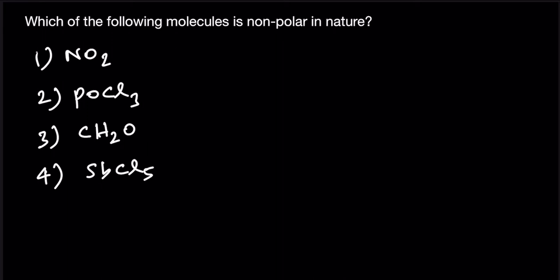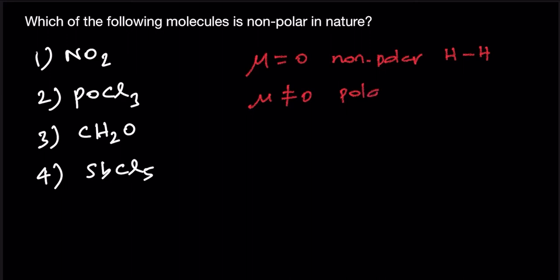Hello everyone. The question here is which of the following molecules is nonpolar in nature. In general, if the dipole moment of a molecule is equal to zero, then it will be nonpolar. For example, simple diatomic molecules like H2 have a dipole moment of zero, and therefore it is a nonpolar molecule. On the contrary, if the net dipole moment is nonzero, then the molecule is considered polar.